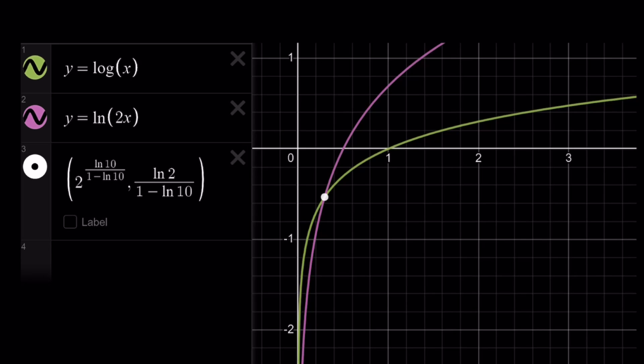But as x gets bigger and bigger, they kind of spread out. And in the middle somewhere, they intersect. And notice that the x-coordinate is positive, but the y-coordinate is negative.